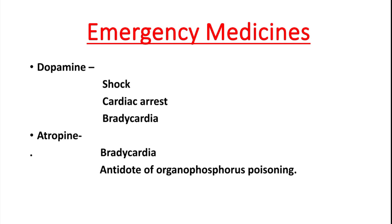Next is dopamine. The functional class of dopamine is adrenergic agonist, and it is used in shock — mainly cardiogenic and septic shock — cardiac arrest, and bradycardia. It improves the heart rate of the patient, so it is used in bradycardia.